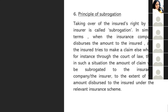Taking over the insurance right by the insurer is called subrogation. In simple terms, when the insurance company releases the amount to the insured and the insured tries to make a claim elsewhere — for instance, in a court of law — the amount of claim will be subrogated to the insurer to the extent of the amount disbursed under the relevant insurance scheme. The court will say: insurance company, you pay the third party, and whatever balance remains after the case concludes, you pay to the insured.